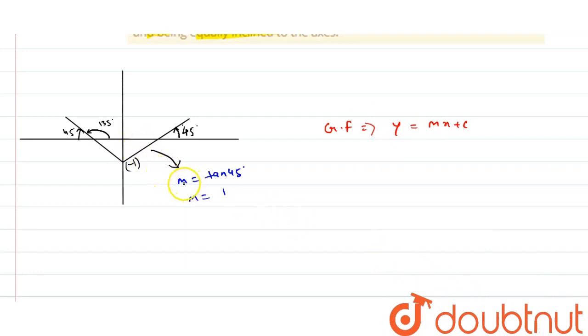Further, I have found out the slope of this line. Now, this line, the slope will be tan 135 and the value of tan 135 is minus 1. Therefore, the slope for this line is minus 1.